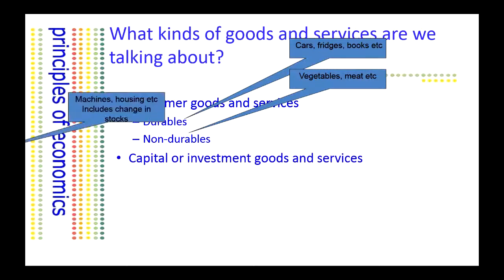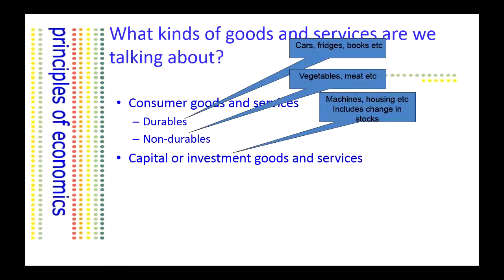The next category are goods and services typically purchased by other businesses — things like machines, housing, and capital goods; in other words, things that are useful for production. This will also include the change in the level of inventories, which we'll talk about a little later on.